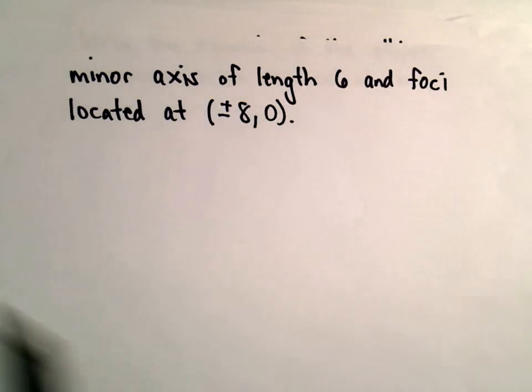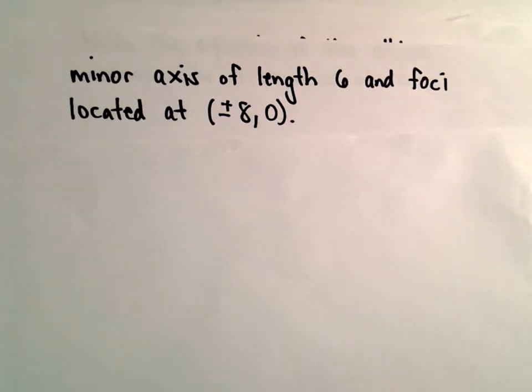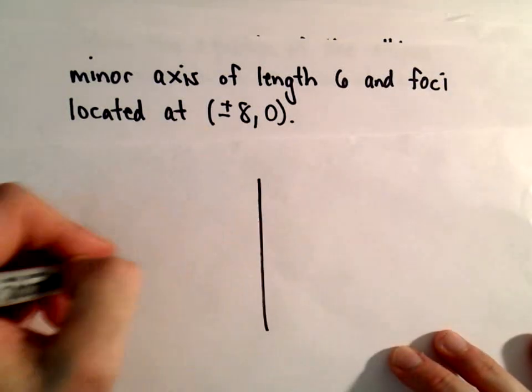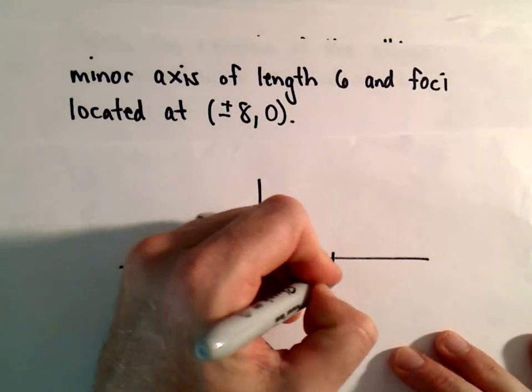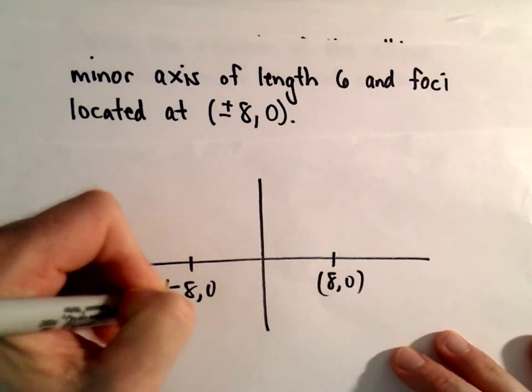A little sketch here. So our foci are at (8, 0) and at (-8, 0).